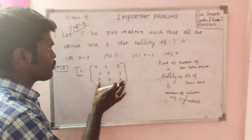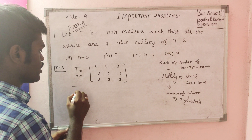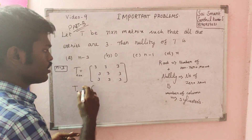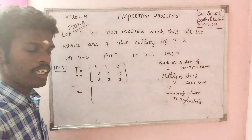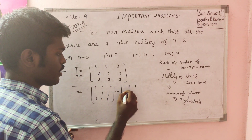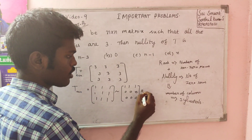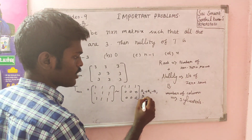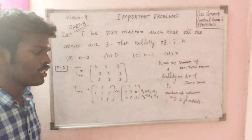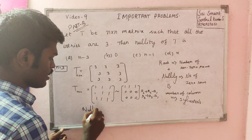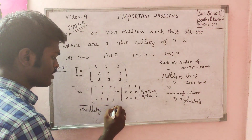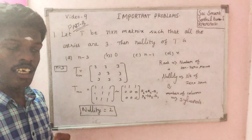Number of zero rows gives nullity. Then the identity is clear. So for an n by n matrix, after row reduction we get zero. The answer is determined by trial and error — we have options four and five.